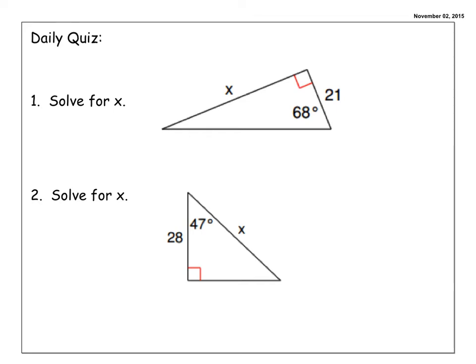For your daily quiz today, you have two questions that involve solving for missing side measures in a right triangle. You are going to be setting up and solving your trig equations from yesterday. Once you have completed your daily quiz, you can move on with your lesson for today.